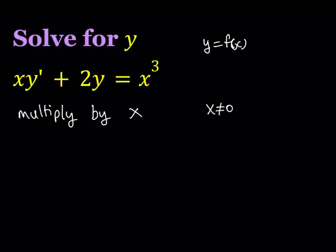At the end, you're going to notice that x equals 0 actually causes some trouble as well. So let's go ahead and multiply everything by x. That gives us x squared y prime plus 2xy equals x to the fourth power.